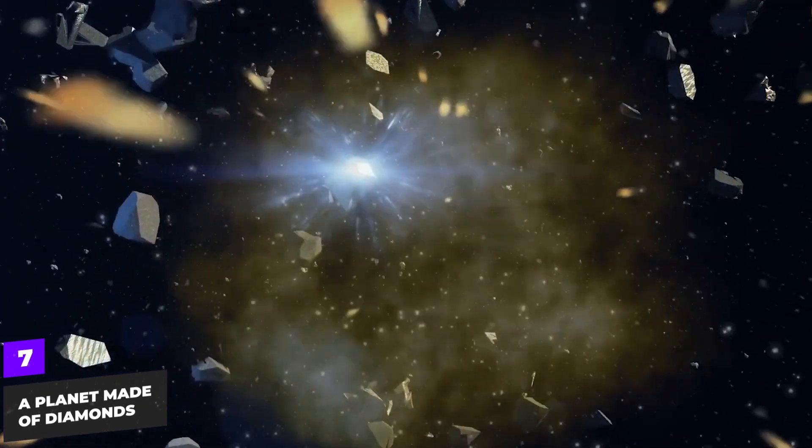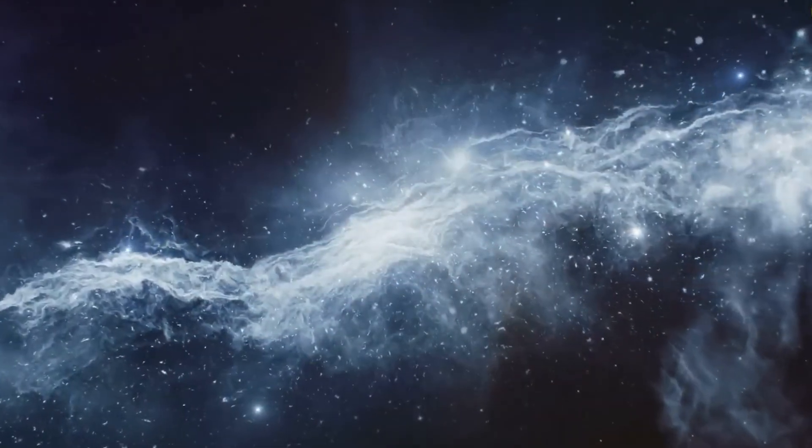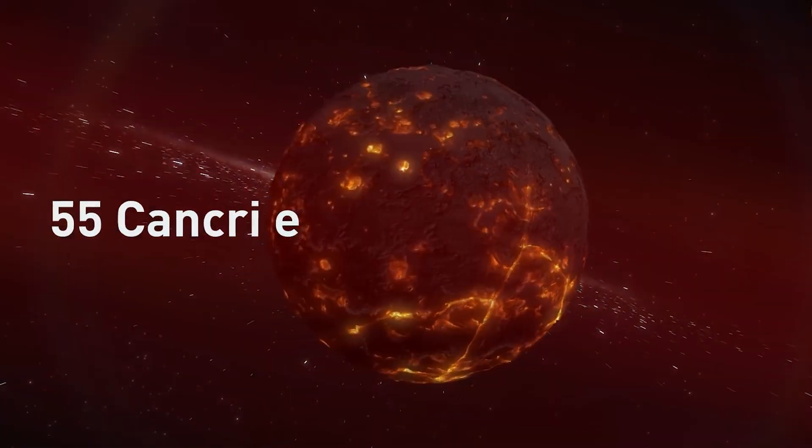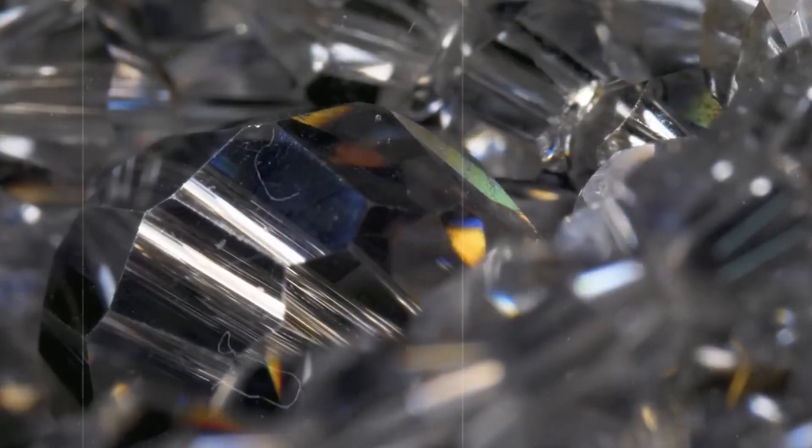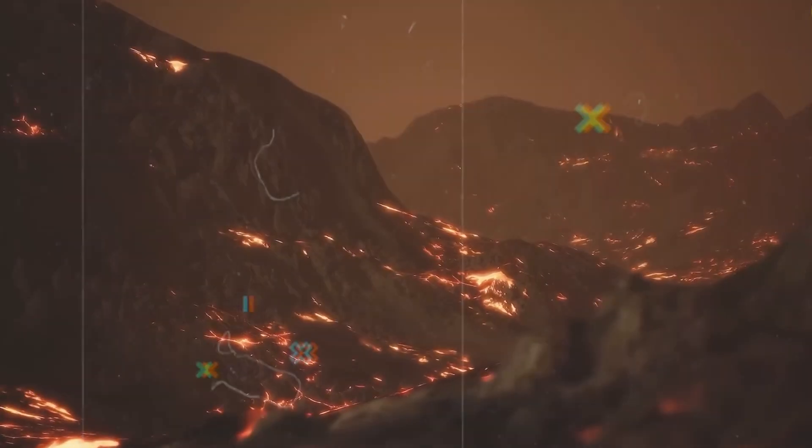A planet made of diamonds. There's a planet so rich in carbon that it's essentially a giant diamond. Located 40 light-years away from Earth, the exoplanet 55 Cancri e is believed to have a graphite surface over a massive diamond interior, estimated to be three times the size of Earth.